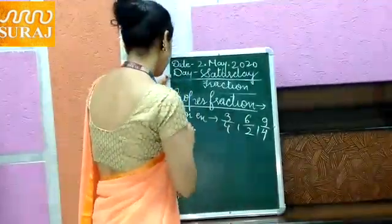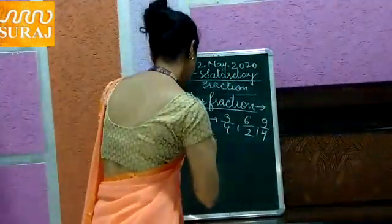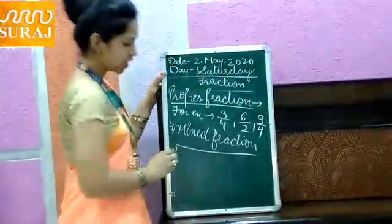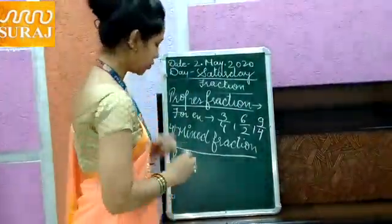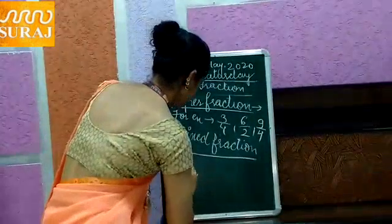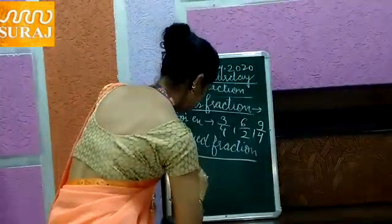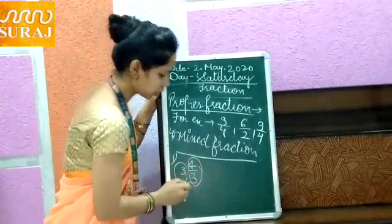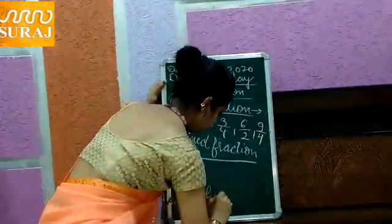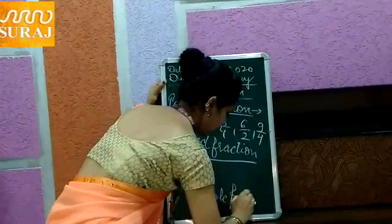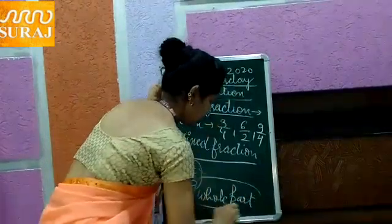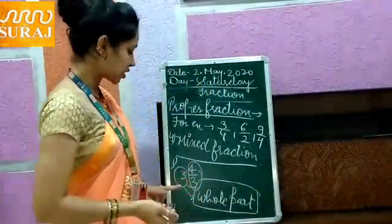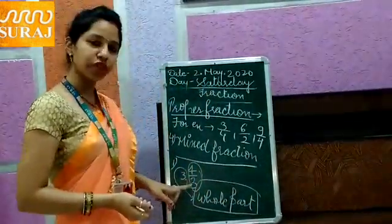Fourth one, mixed fraction. In mixed fraction there are three parts. There is a whole part and a fractional part. First is whole part and second one is a fractional part.